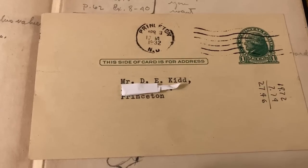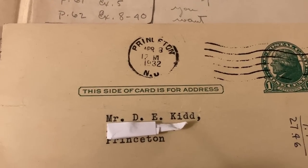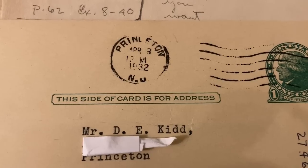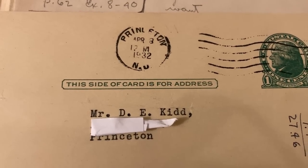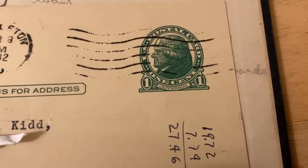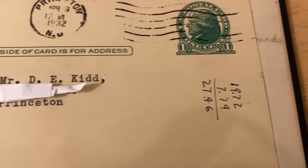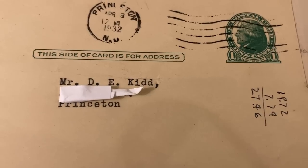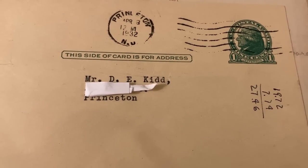So I found this mysterious card in the book, which is really quite fascinating. It says Princeton, and it looks like it says April 8th, 1932. It says this side of card is for address, and there's a stamp here. It says postal card, one cent, Jefferson. There's some numbers there, and there's a person's name. It says Mr. D.E. Kidd, and then it says Princeton. Now, there's a little piece of paper there. That's because I've covered up the address. So I googled the address, and there's actually still an old historical house at that address.